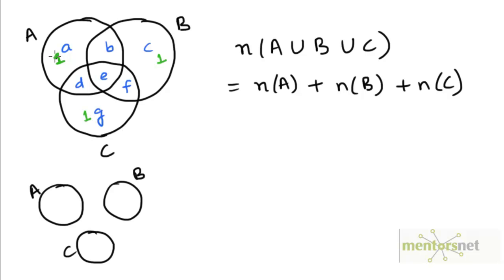Why would these three regions be counted only once? Because they lie in exactly one set — region A lies only in set A, region C lies only in set B, and region G lies only in set C. But if we look at regions D, B, and F, the elements in region D would have been counted two times: once when adding N(A), and again when adding N(C), because this region is common to A and C.